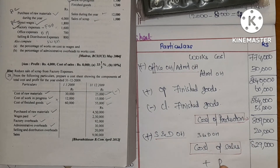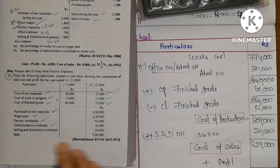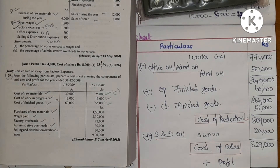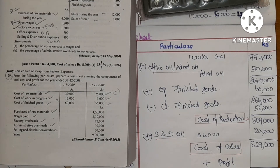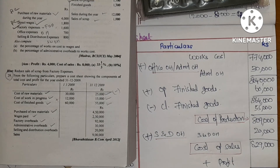Now for profit: sales are nine lakhs. Sales minus cost of sales: nine lakh minus eight lakh twenty-nine thousand gives a profit of seventy-one thousand. So the profit is approximately 71,000.